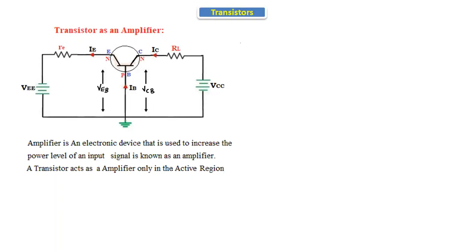The transistor acts as an amplifier only in the active region. In the active region, there are two junctions: the emitter junction and the collector junction. The emitter junction is forward biased and the collector junction is reverse biased. When these conditions are met, we say the transistor is in the active region.